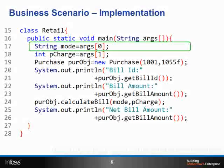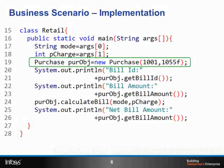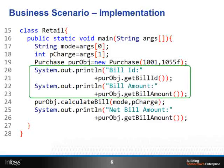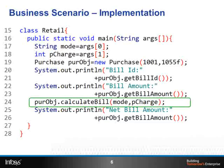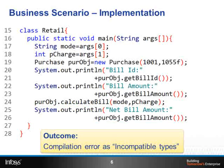The Retail class is a starter class hosting the main method. The first command line argument, args[0], is assigned to the local variable mode as mode of payment. Similarly, the second argument, args[1], is assigned to pCharge as processing charge percentage. An object is created for the Purchase class by passing values for bill ID and bill amount. Once bill ID and bill amount are displayed, the calculateBill method is invoked by passing mode of payment and processing charge, and then the net bill amount is displayed.